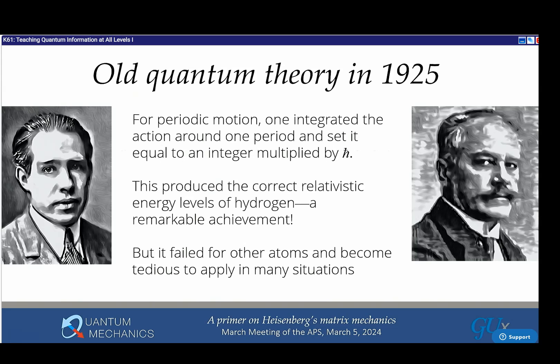In the old quantum theory in 1925 was Bohr-Sommerfeld quantization. You had periodic motion, integrate the action around a period, set it equal to an integer multiplied by h-bar. What is remarkable is when Sommerfeld did his calculation of the relativistic hydrogen atom, they got the spectral lines. The relativistic energies of hydrogen were known before quantum mechanics was invented.